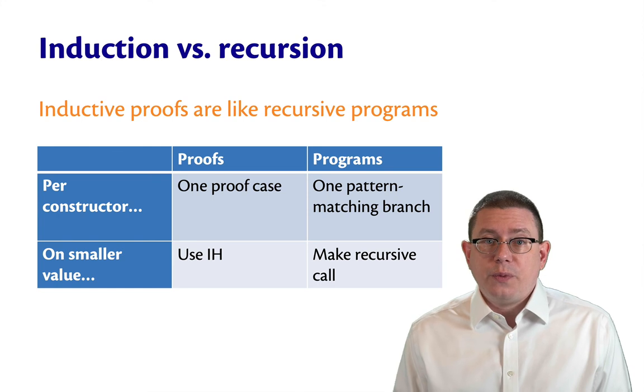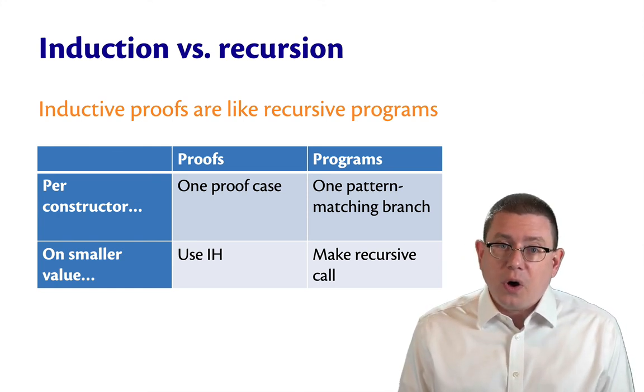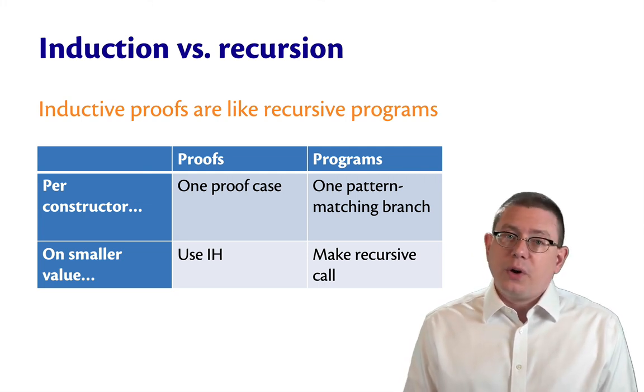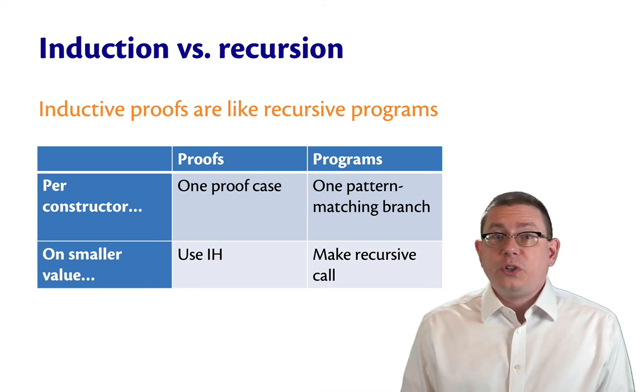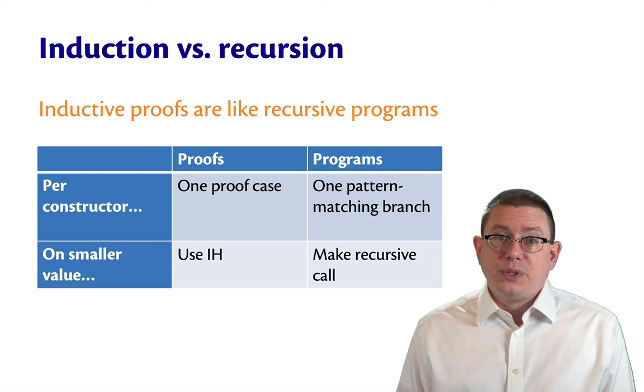Likewise, in programs, when we write functions over these data types, we typically make a recursive call for each smaller value. If you want to determine what the length is of a list, you make one recursive call on the tail. If you want to determine what the size is of a tree, you make two recursive calls on the two subtrees.